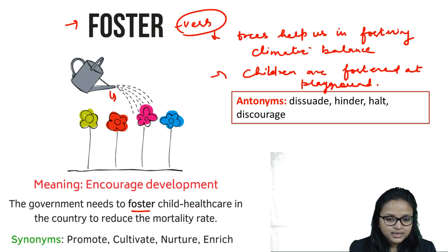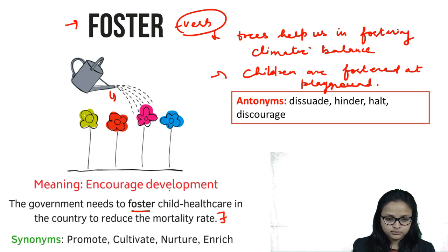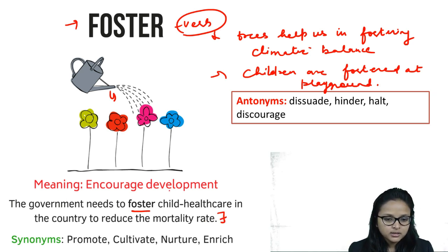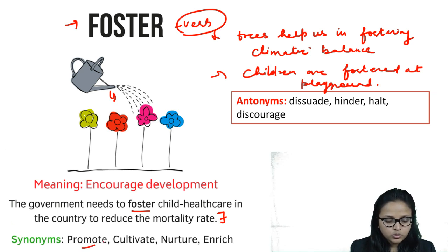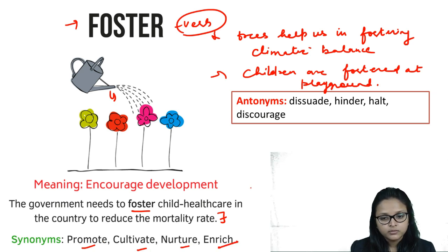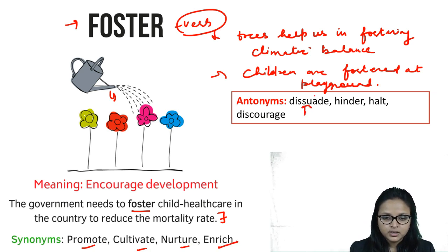'The government needs to foster child healthcare in the country to reduce the mortality rate' — meaning we need to develop better child care. Synonyms: promote, cultivate, nurture, enrich. Antonyms: halt, discourage — things that hinder growth.